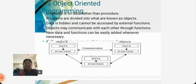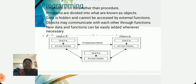Object Oriented Programming. Emphasis is on data rather than procedure. Programs are divided into what are known as objects. Data is hidden and cannot be accessed by external functions. Objects may communicate with each other through functions. New data and functions can be easily added whenever necessary.